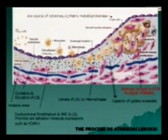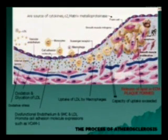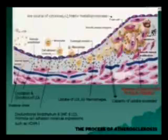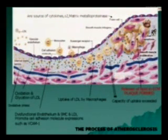The first step is that within the circulation you have LDL — low density lipoprotein, the bad cholesterol. This LDL gets internalized into the intima; that is the second step. In the presence of oxidative stress, this LDL gets modified by processes like oxidation and glycation, resulting in the formation of oxidized LDL.